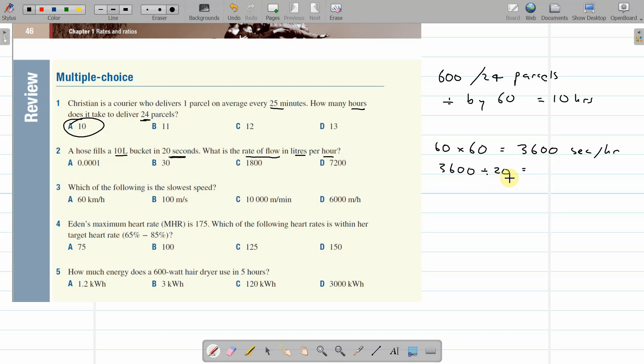That will tell us how many lots of 20 seconds go into the hour. So 3600 divided by 20 is 180 lots of 20 seconds. And there's 10 litres for every one of them. So 180 lots of 20 seconds times 10 litres will give us 1800 litres per hour. Which is that one.